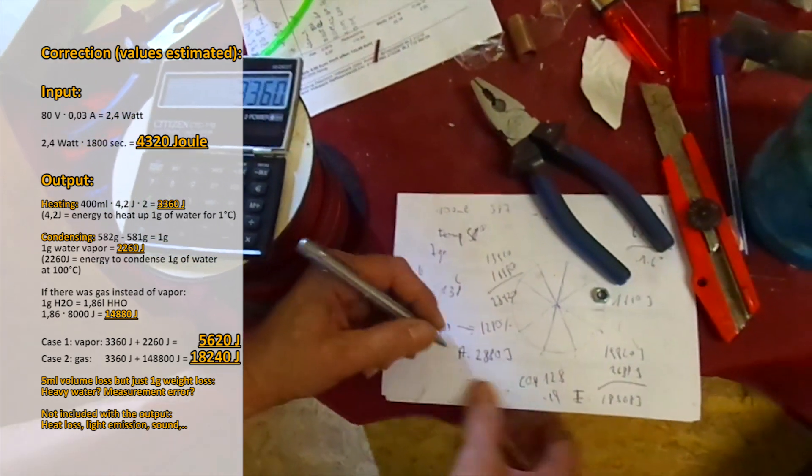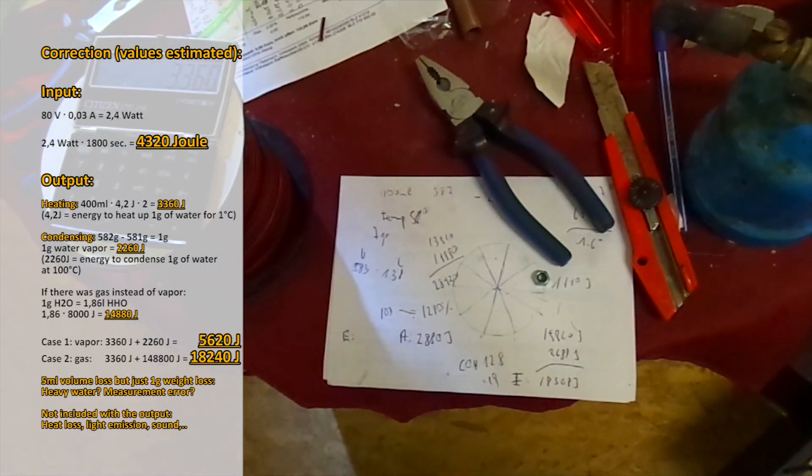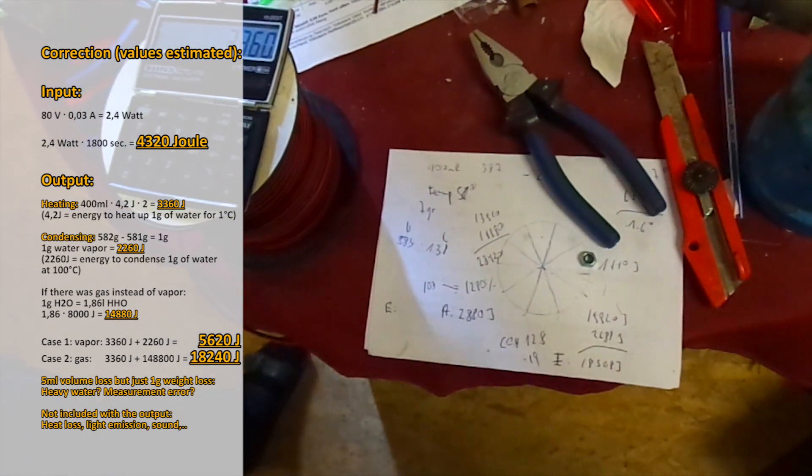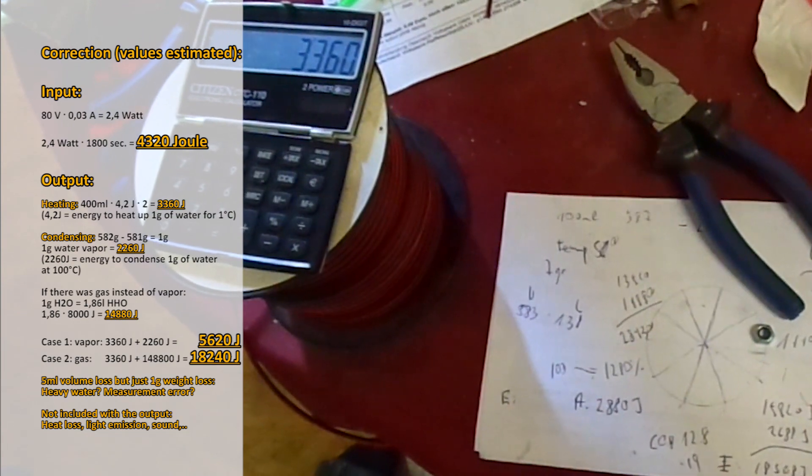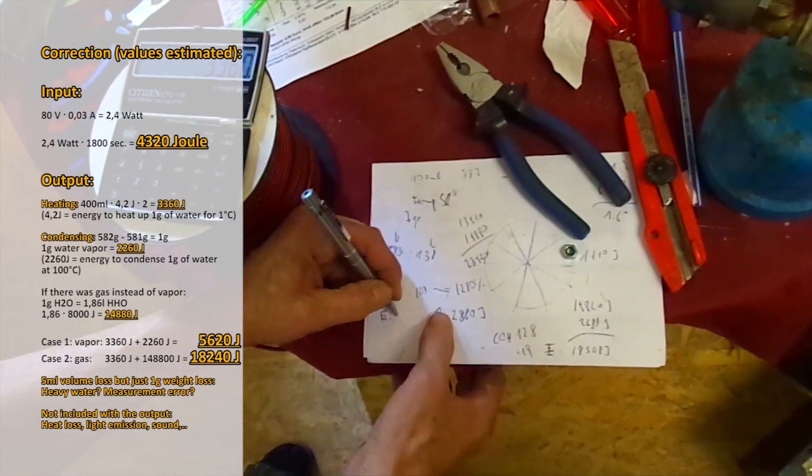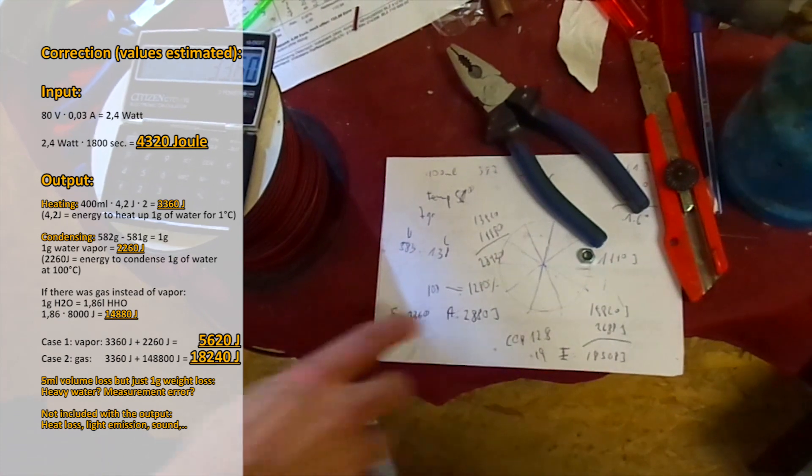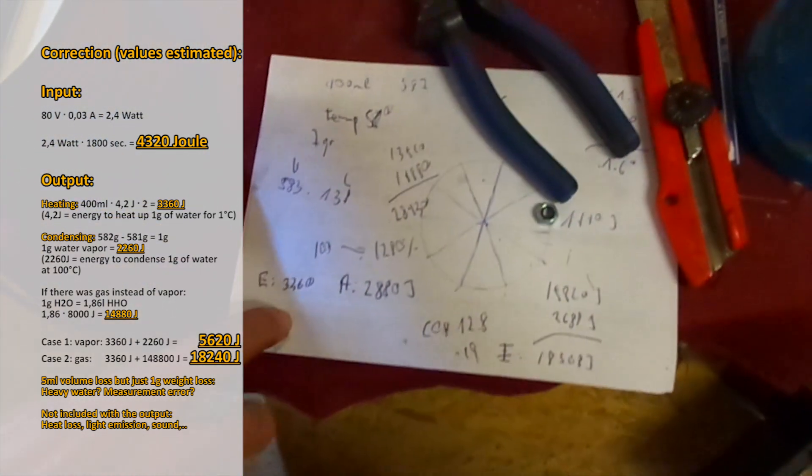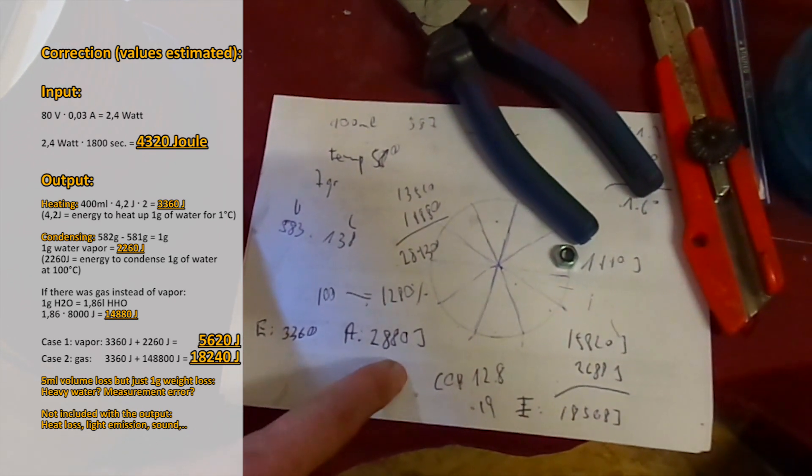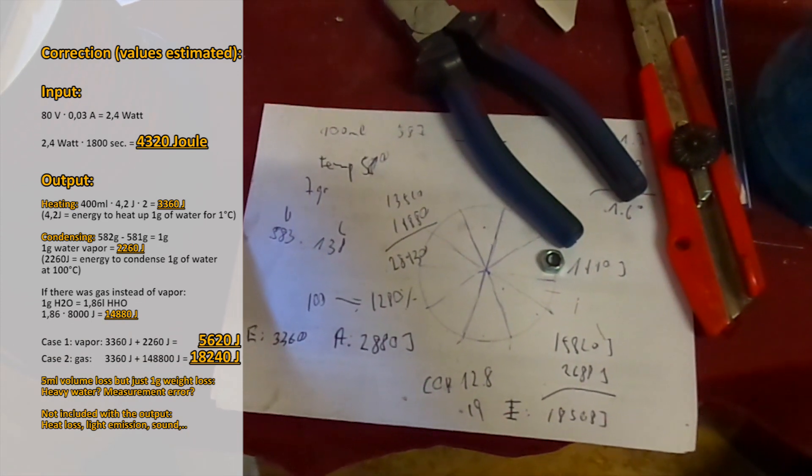Now for the output. We started with 58 degrees Celsius and ended up with 60 degrees. So the water was heated up for 2 degrees Celsius. This is 400 milliliters by 4.2 Joules. Because we need 4.2 J to heat up 1 gram of water for 1 degree Celsius. 400 milliliters by 4.2 J by 2 degrees Celsius equals 3,360 Joules. This is just water temperature. It's all without light emission, sound, heat and line loss and everything. 3,360 J is even better than any immersion heater. An immersion heater would just have 2,400 J output. But it is just 85 to 90% efficient, perhaps.